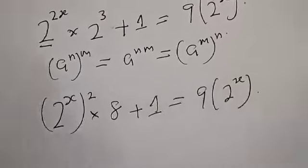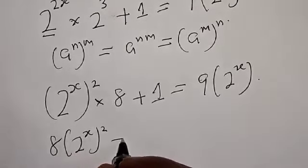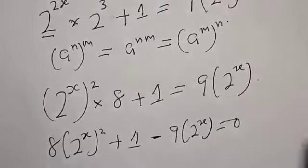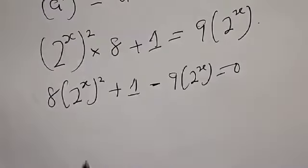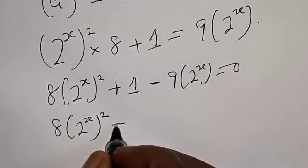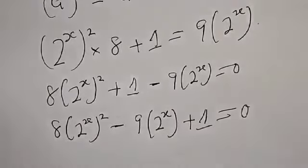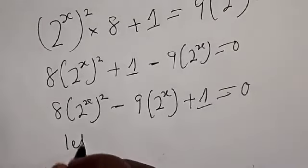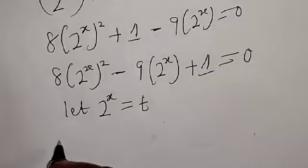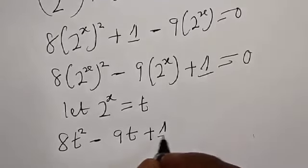We then have 8 into 2 raised to power s squared, plus 1, minus 9 into 2 raised to power s, is equal to 0. Rearranging, we have 8 into 2 raised to power s squared, minus 9 multiplied by 2 raised to power s, plus 1, is equal to 0. Now let 2 raised to power s equal t. Therefore, we have 8t squared minus 9t plus 1 is equal to 0.